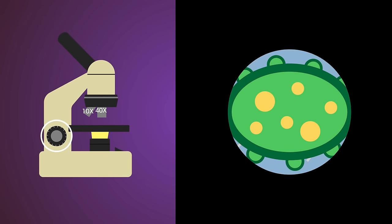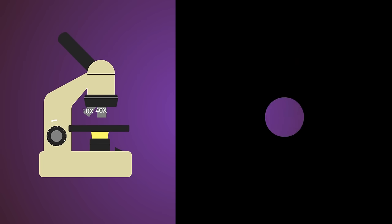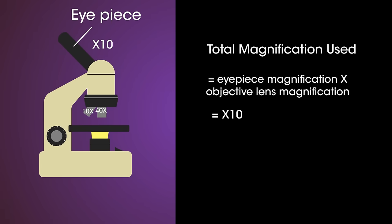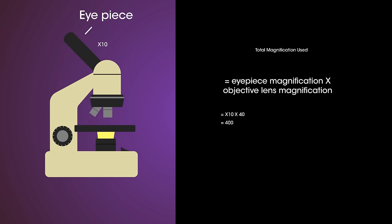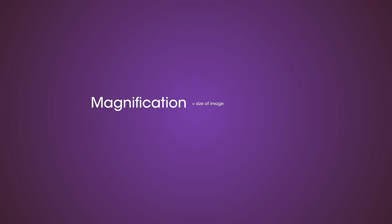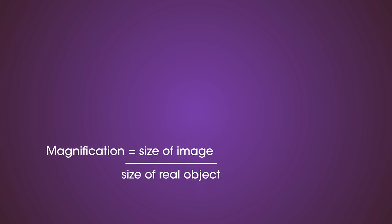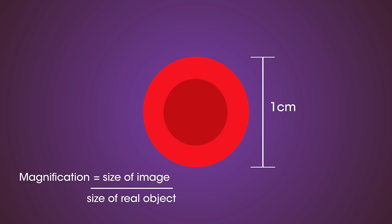You might have to readjust the focus. Now you can clearly see the specimen. You can draw it and write down the total magnification you used. This is calculated by multiplying the magnification of the eyepiece lens, which is normally ×10, by the magnification of the objective lens. You will also need to be able to use a magnification formula: magnification equals size of image divided by size of real object. So if the diameter of an image of a red blood cell in a book is 1 centimeter, and the actual diameter of a red blood cell is 0.001 centimeters...